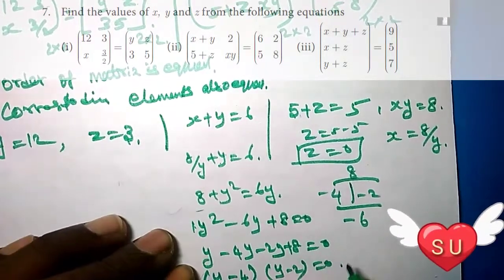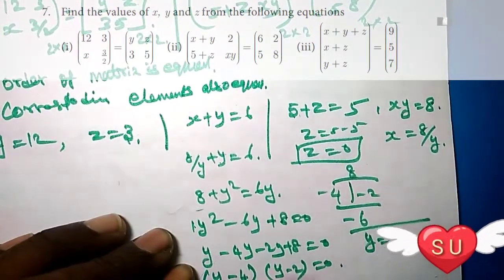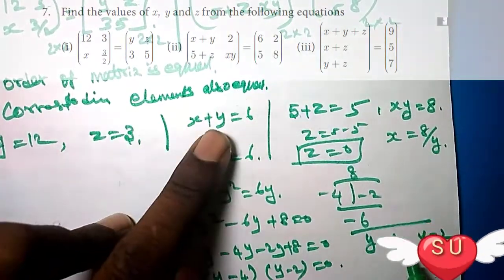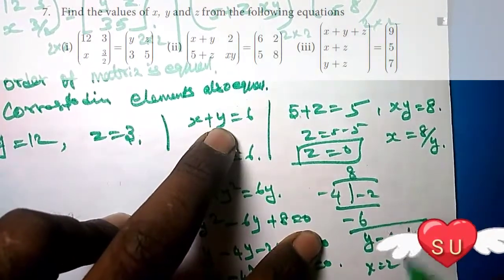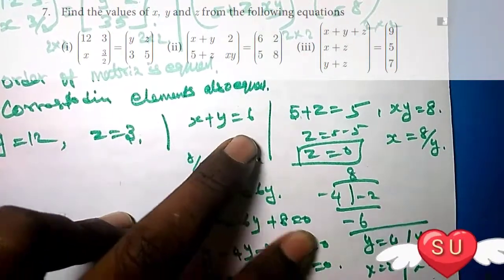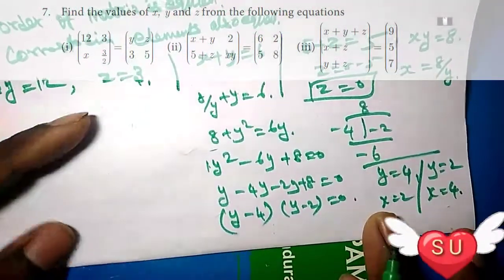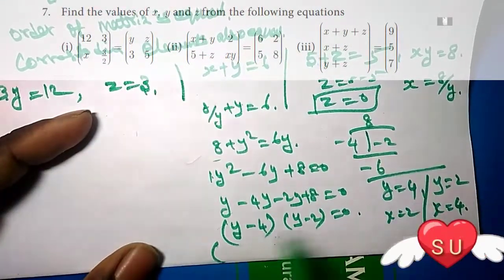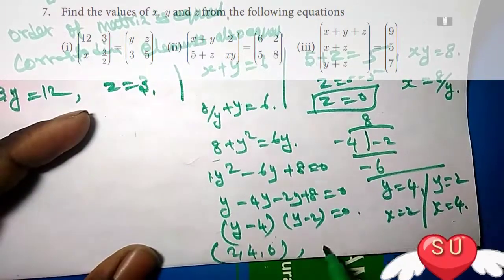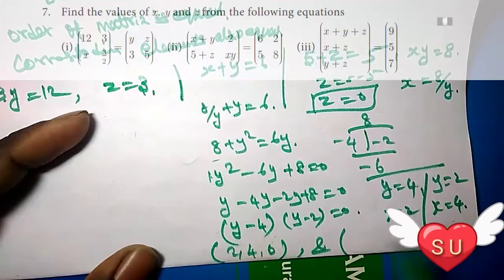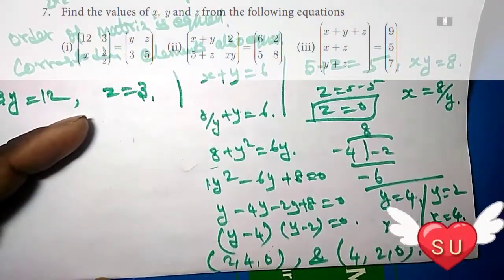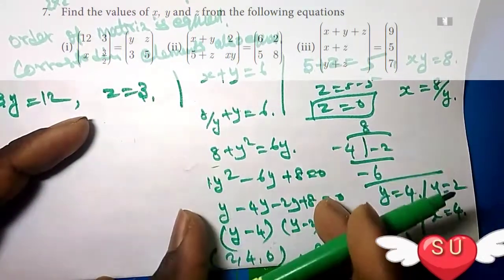Solving the quadratic, y equals 4 or y equals 2. So two solutions: when y equals 4, x equals 2, z equals 0; and when y equals 2, x equals 4, z equals 0. These two solutions are obtained using the factorization formula.